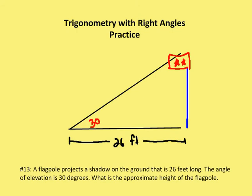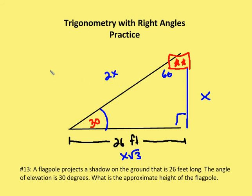The last problem uses angle of elevation to find the height of a flagpole, which we'll call X. We have an angle of 30 degrees and a horizontal measurement of 26 feet. The angle at the base of the flagpole on the other side is 60 degrees, making this a 30-60-90 triangle with relationships X, X root 3, and 2X. Since 26 feet corresponds to X root 3, we can say X root 3 equals 26, so X equals 26 over root 3.